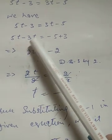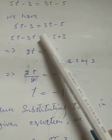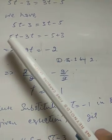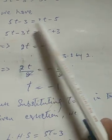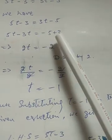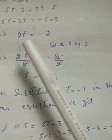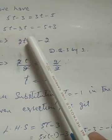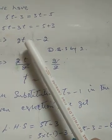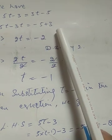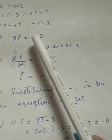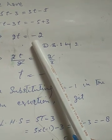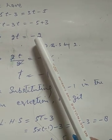5t minus 3t. You see 3t here. Transposing 3t to LHS, we get 5t minus 3t equals 2t. Transposing minus 3, we get 2t equals minus 5 plus 3, which equals minus 2.